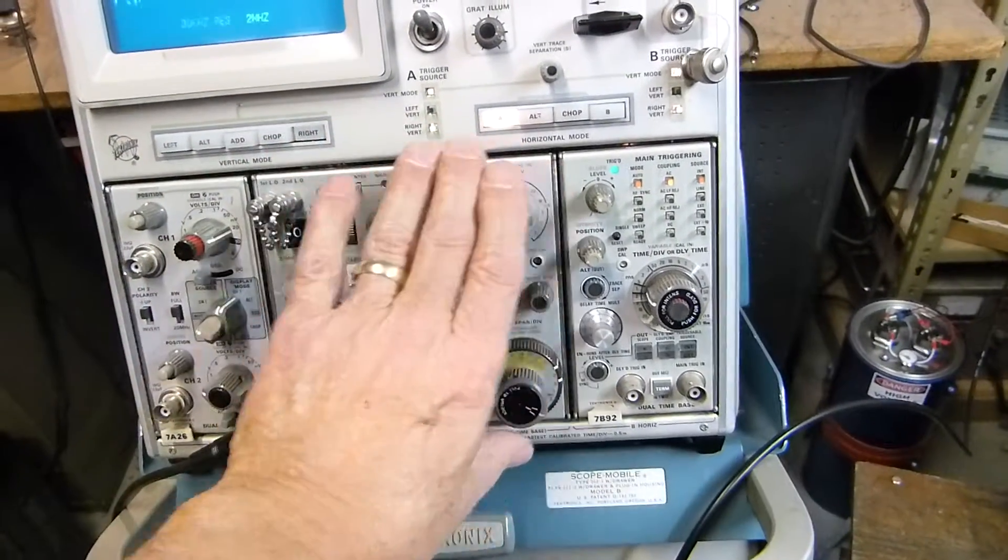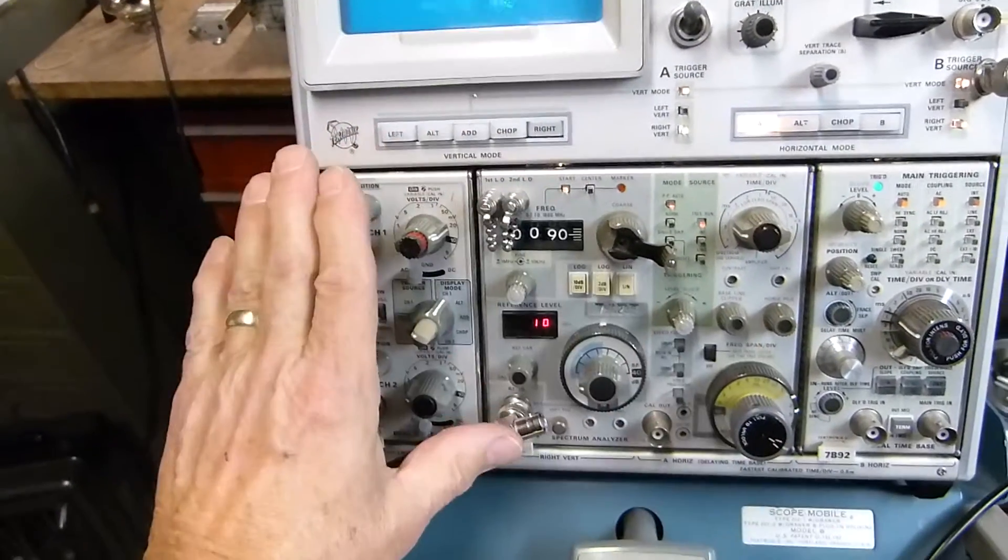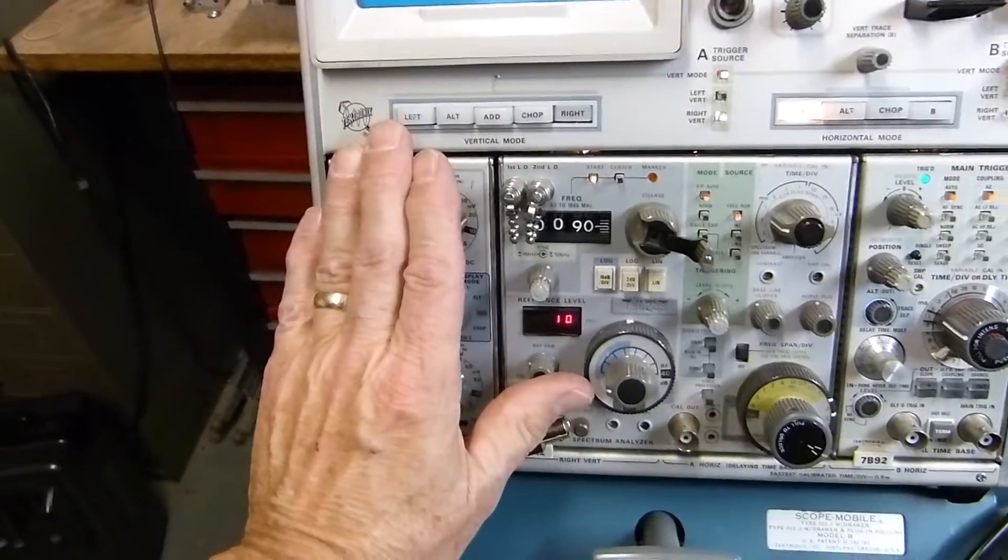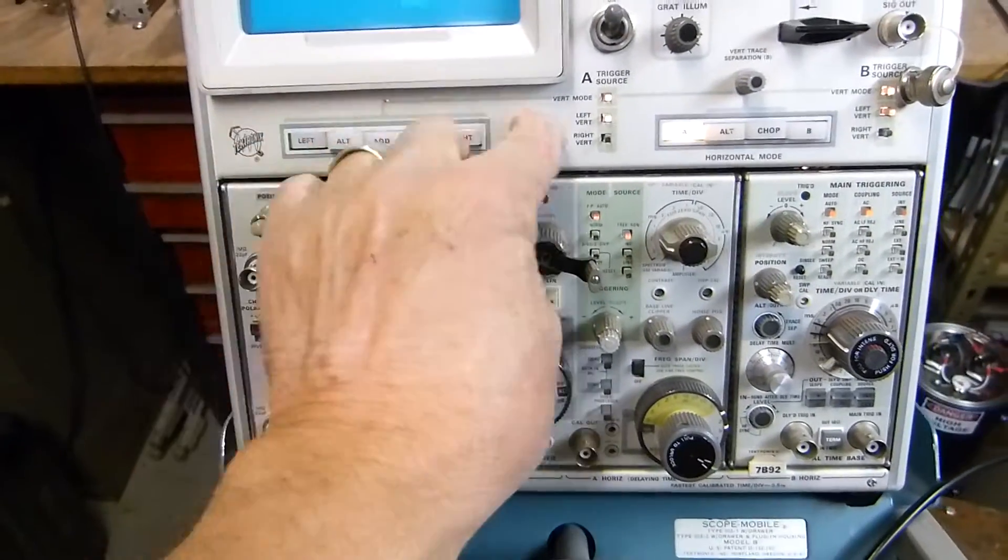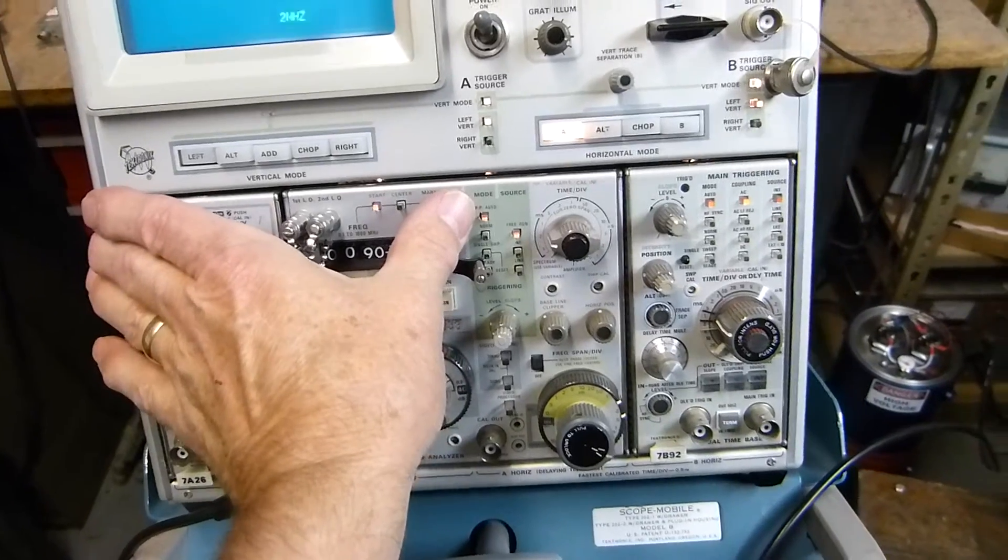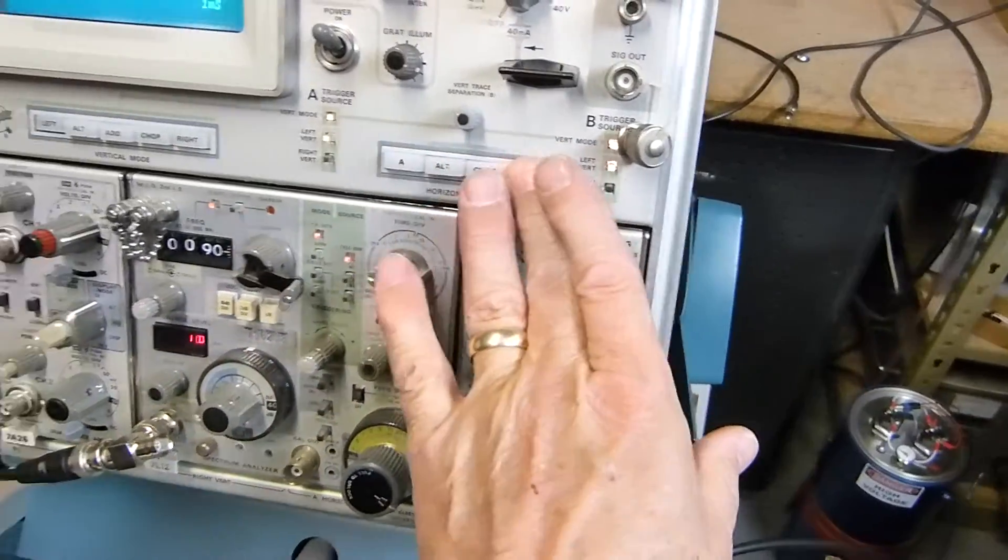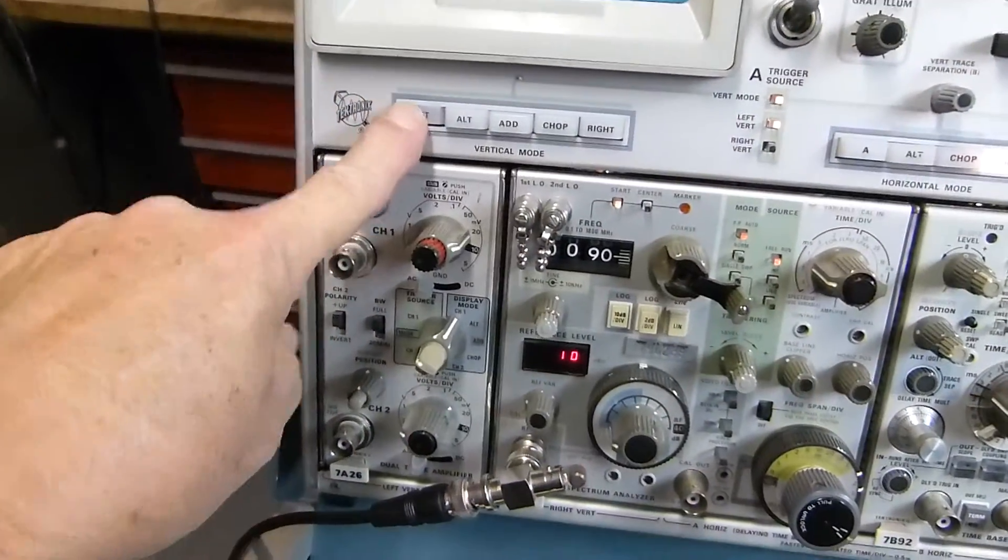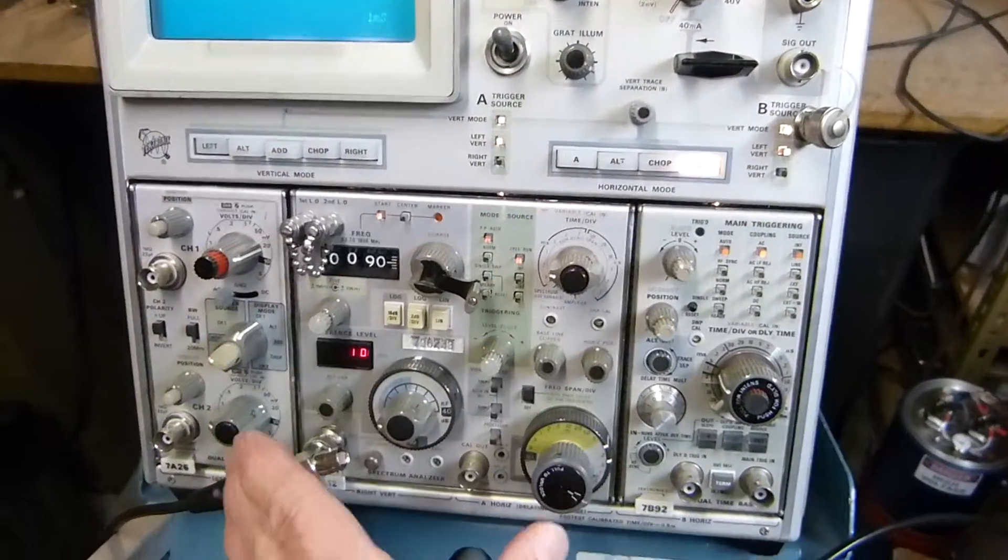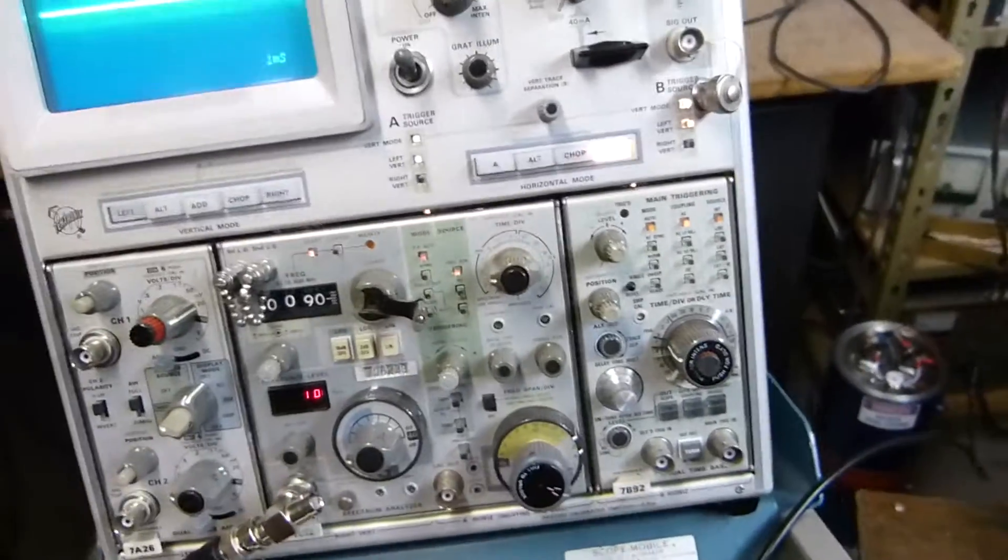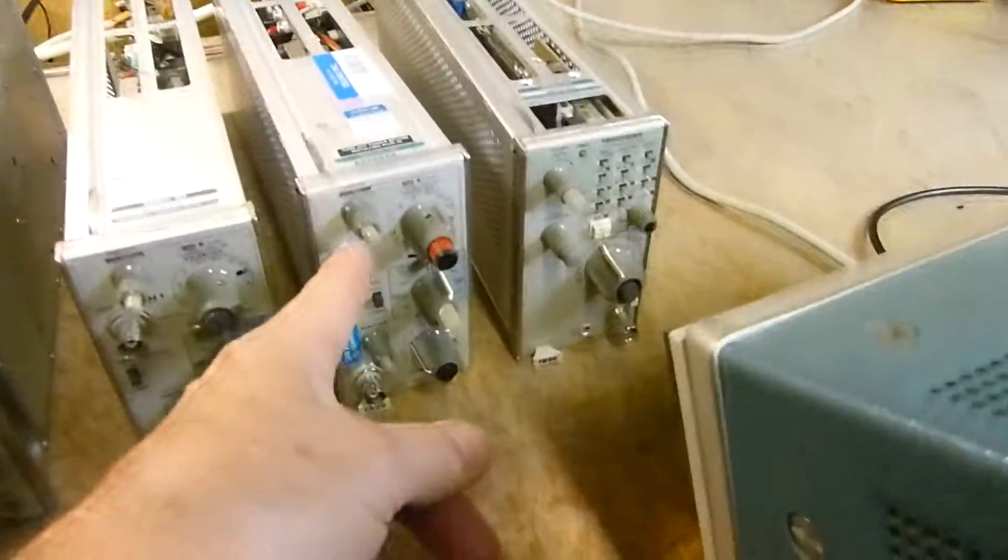If I want to make a regular oscilloscope out of it and use this channel and this time base, I select left. This right here is selecting one of these two channels, and horizontal mode is selecting one of these two channels. So I say right. By pressing this one I've selected here, by pressing this one I've selected here. This one is not being used now.